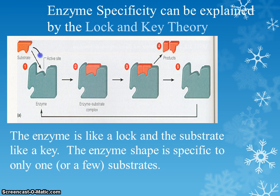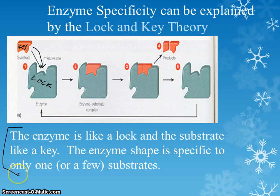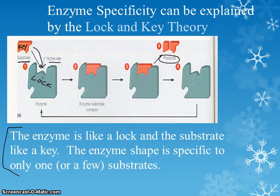The way that substrates fit into an enzyme's active site is super specific — just like a lock and a key. Picture the enzyme as the lock to your front door, and the substrate is your key. Your key has to have a very specific shape to go into the lock. You can't use your neighbor's key in your lock because it won't fit. If you mess up the shape of the active site or the substrate, this interaction won't happen, and you won't make any products. This is the lock and key theory.